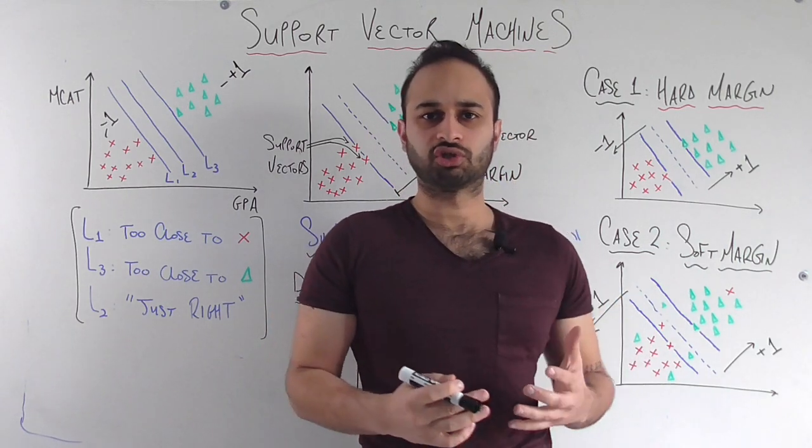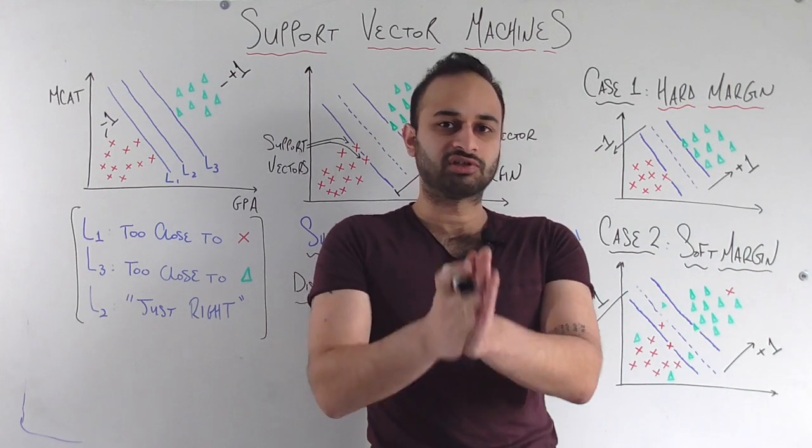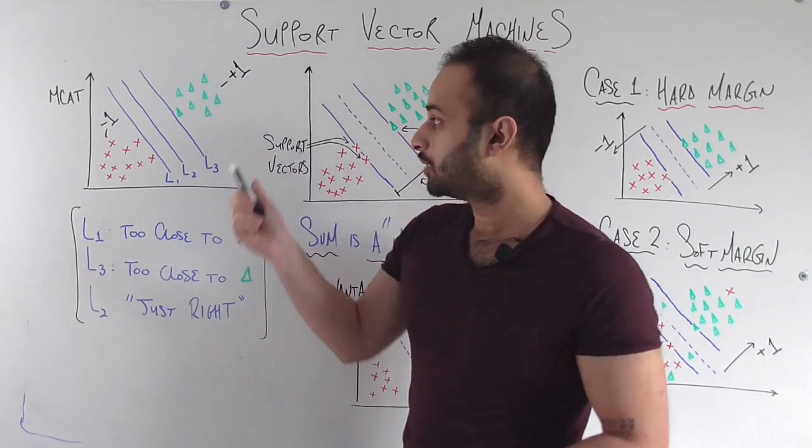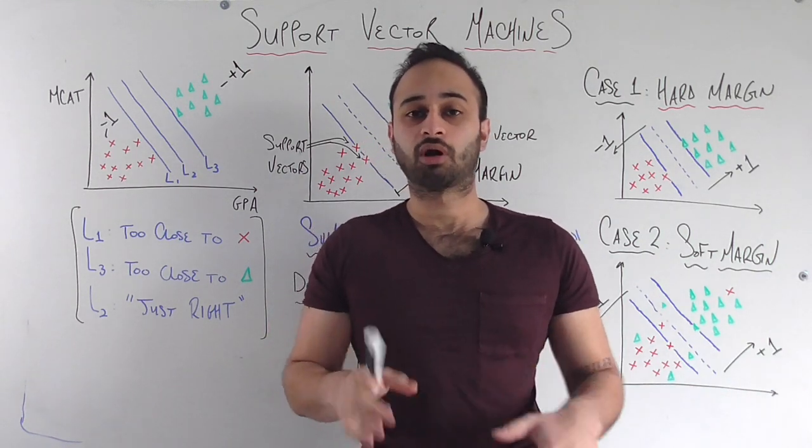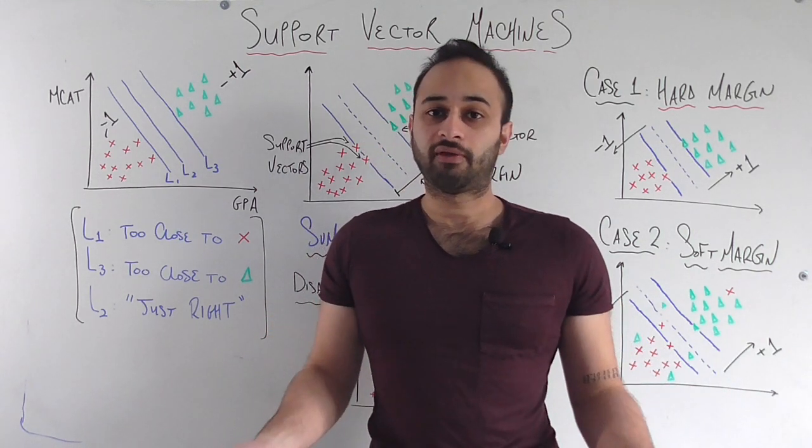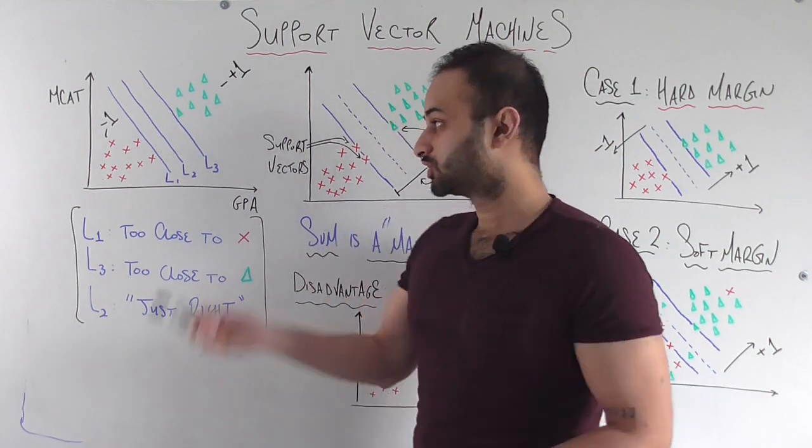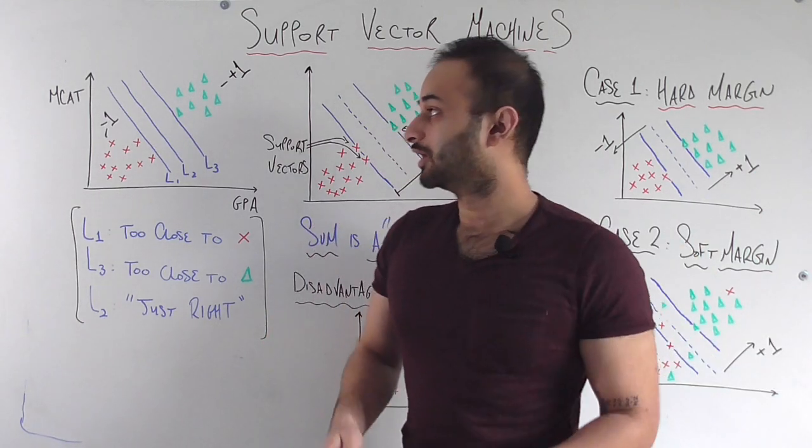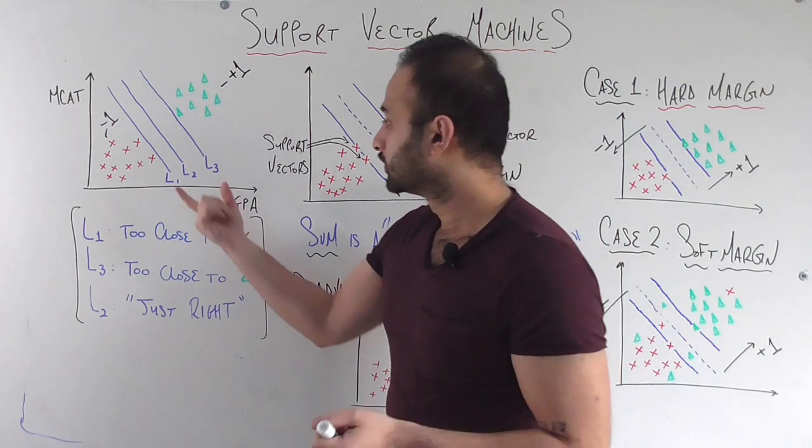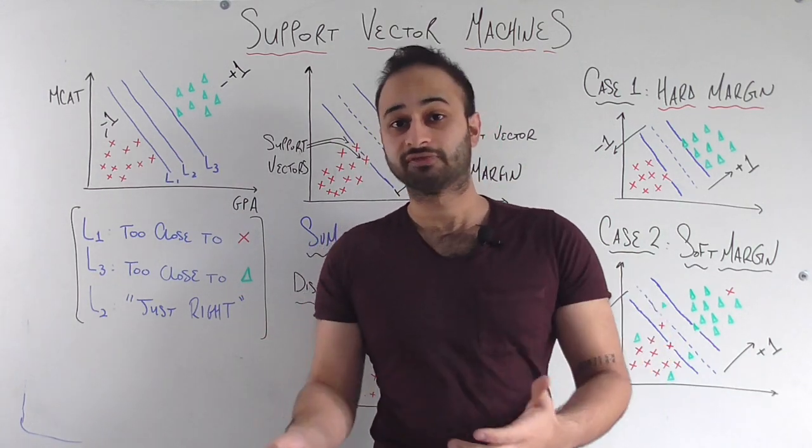It's kind of this Goldilocks situation where it's just right. It's just in the middle of these two classes. It gives us some breathing room so that if new observations come in, they can still be on the correct side of the line. And we feel more comfortable about that. Believe it or not, that's the end of SVM. That's how SVM works, just graphically. It chooses the best line or best plane or best hyperplane who gives the most distance, or in official terms, as we'll see, gives the biggest margin between the two classes that we're trying to classify.